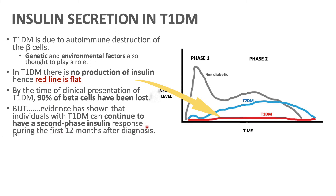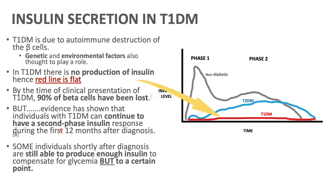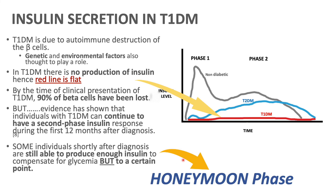There has been evidence that shows that in type 1 diabetes after diagnosis, there is still a second phase. One interesting point is that some individuals shortly after diagnosis are still able to produce enough insulin to help with the hyperglycemia, but only to a certain point. This brings us to what is termed the honeymoon phase or honeymoon period, which will be covered in a separate lecture.